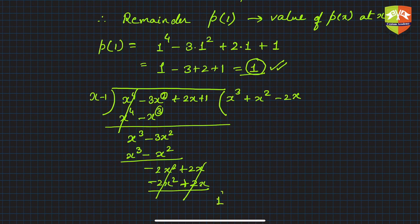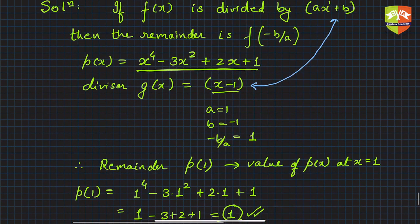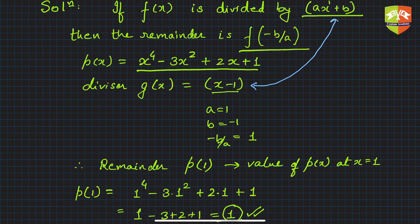Only 1 remains. So the quotient is as shown and the remainder is 1, but we didn't need to perform the division. You could have gotten this by applying the Remainder Theorem, which says that if f(x) is divided by ax + b, the remainder is f(-b/a), the value of the polynomial at x = -b/a.